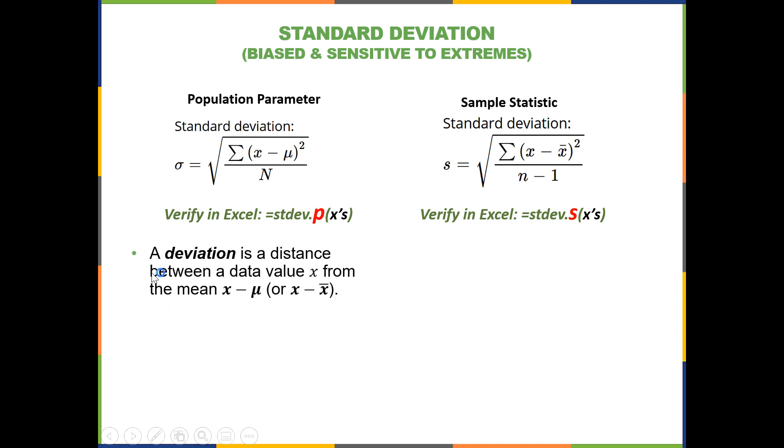A deviation is a distance between a data value X from the mean, X minus mu, or X minus X bar if it's a sample.